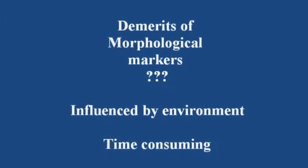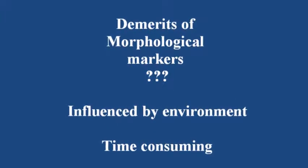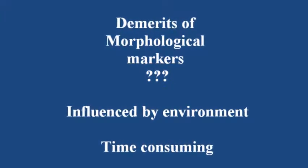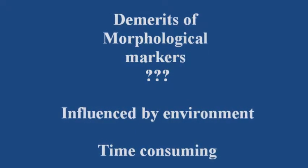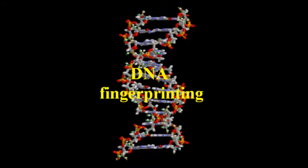Morphological characters have their own demerits — morphological characters can vary according to environmental changes, which leads to false justification, and it will also take a longer time. Hence comes the importance of an alternate method which is rapid, reliable, and reproducible, known as DNA fingerprinting. In DNA fingerprinting, markers play a major role in revealing polymorphism.